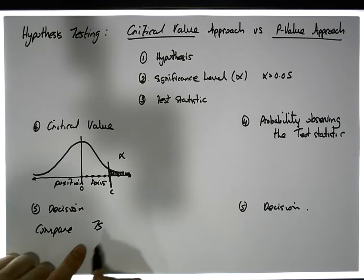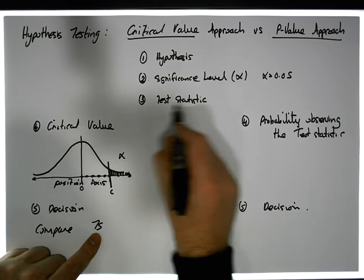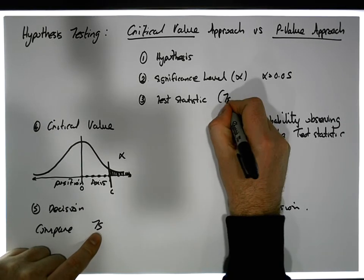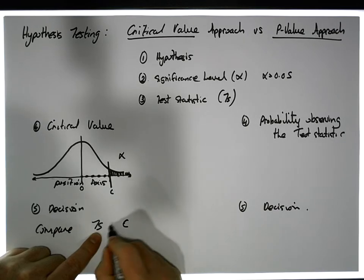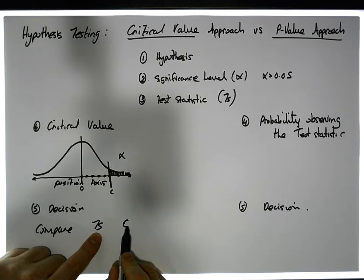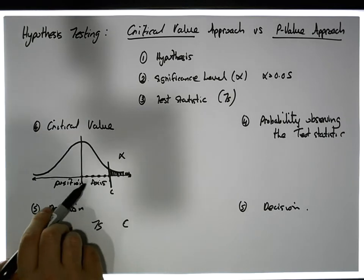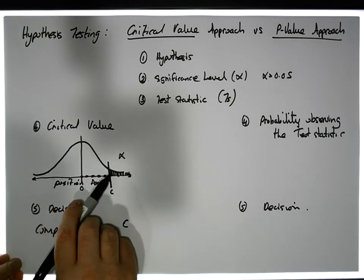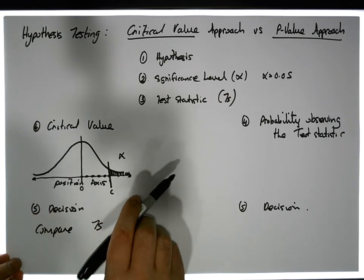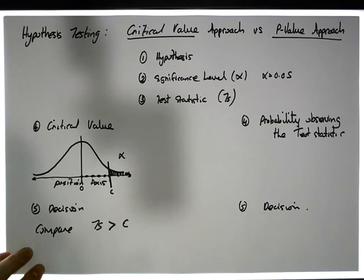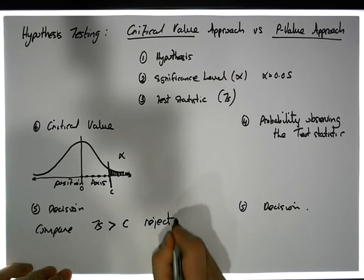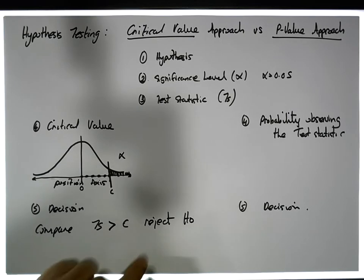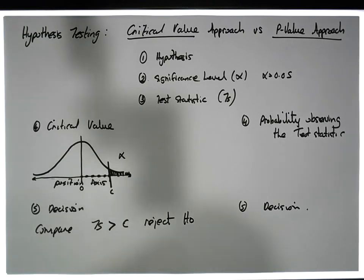The test statistic, or TS, gets compared to the critical value. More importantly, if the test statistic is far enough away from zero and beyond the critical value — in other words, if the test statistic is bigger than the critical value — we reject the null hypothesis H0 in favor of HA. That's effectively the critical value approach.